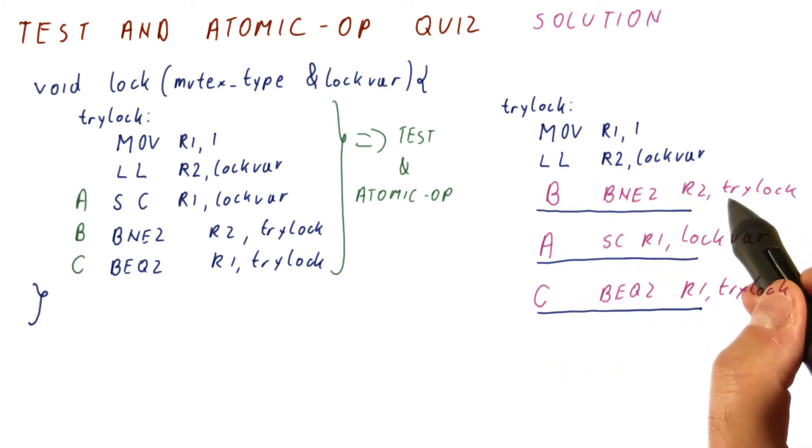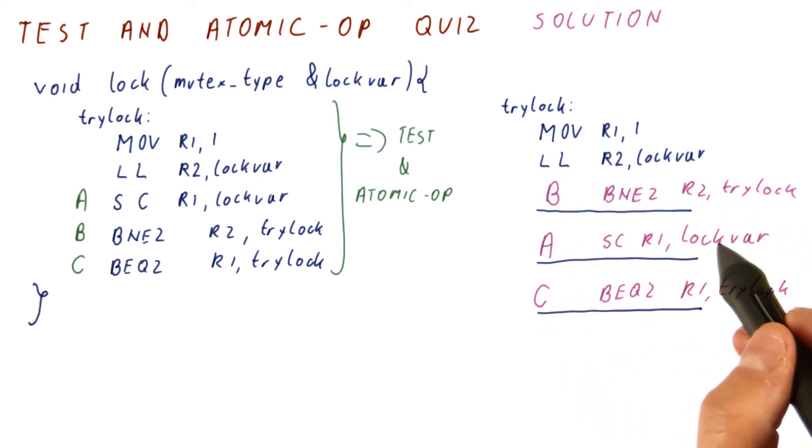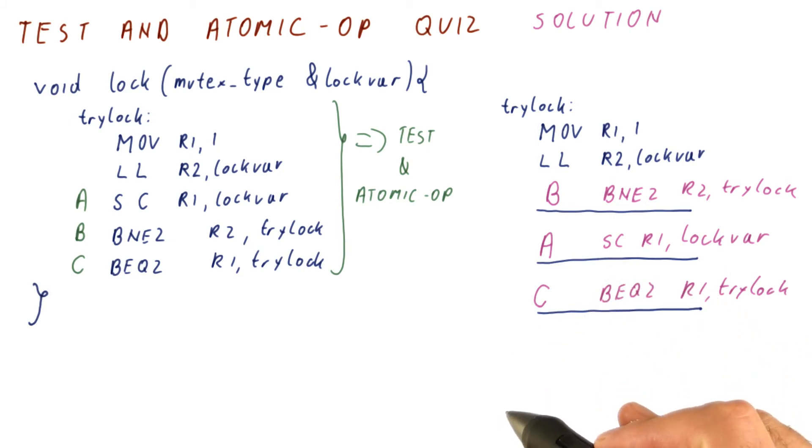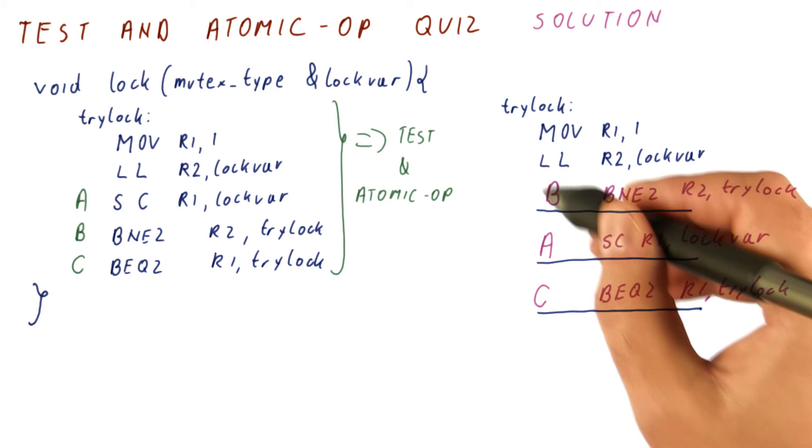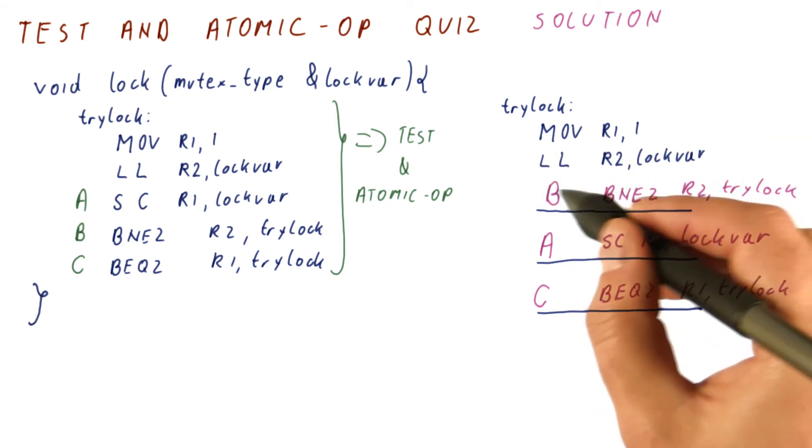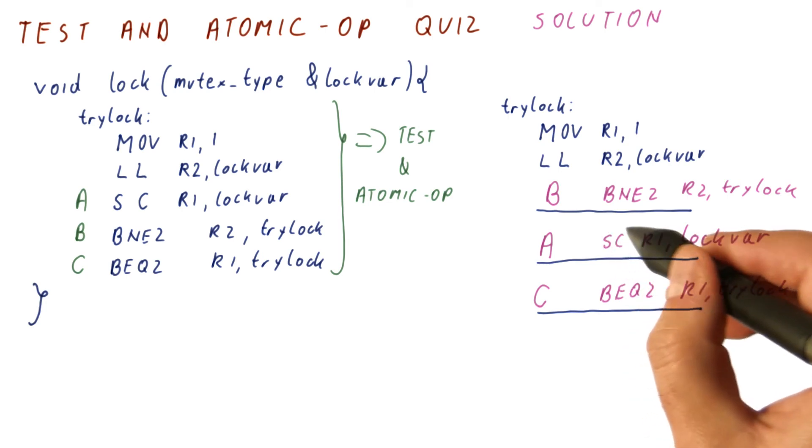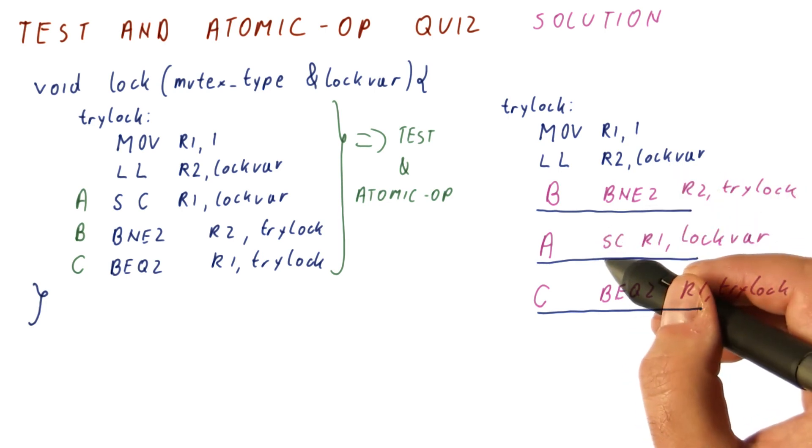So after our load link, we check whether the lock was free. If so, we try the store conditional. If we succeed, then we got the lock. The waiting for the lock to become free is done using the same load link that will be part of our atomic operation once we add the store conditional, when we see that the lock is free.